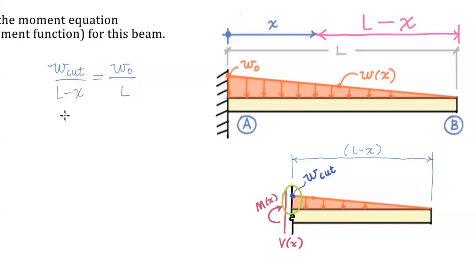It's equal to w_0 times L minus x divided by L. And I'm going to add that, I think I'm just going to rewrite this. So I can do it a little bit smaller.